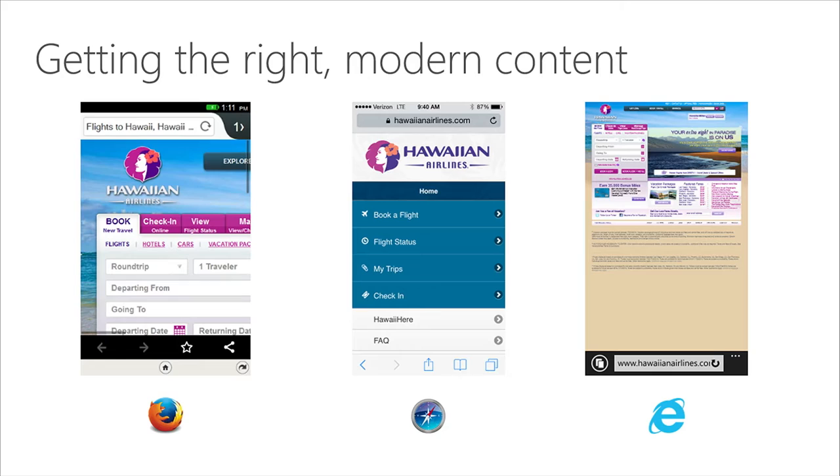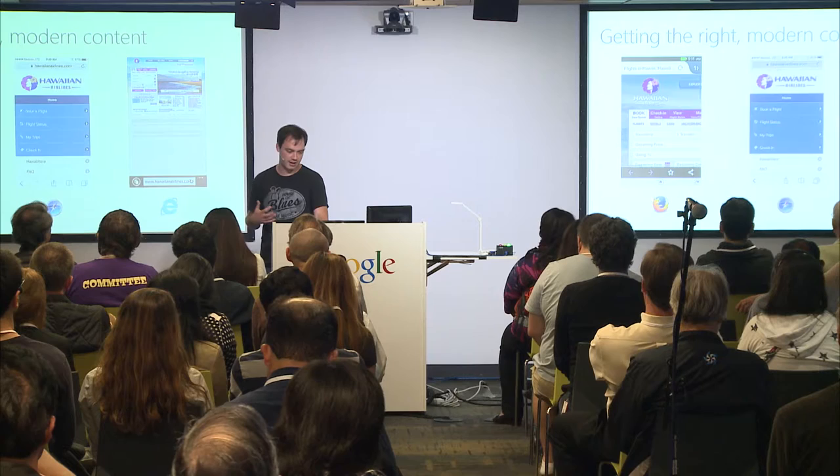Internet Explorer versions actually trained developers to just stop sending the same markup — there was just this assumption that it would just not work. This is the same website, same URL, loaded in Firefox Mobile, Safari Mobile, and IE on Windows Phone — you get three different websites. This is a huge problem. In order to get our users the right modern experiences, the first step was just to get the right content, and that largely comes down to the user agent string.